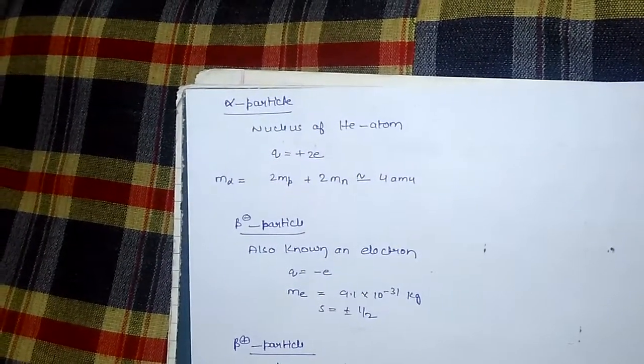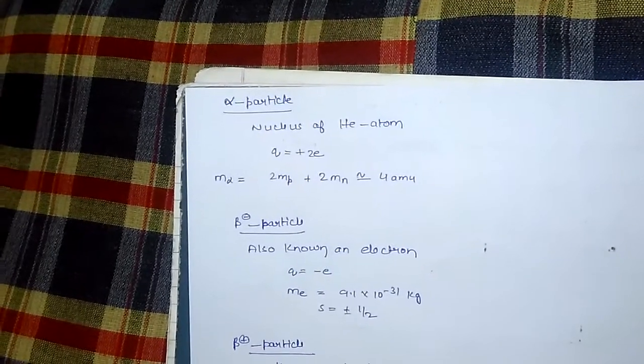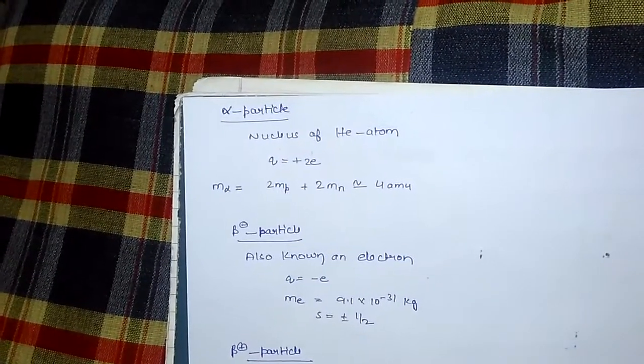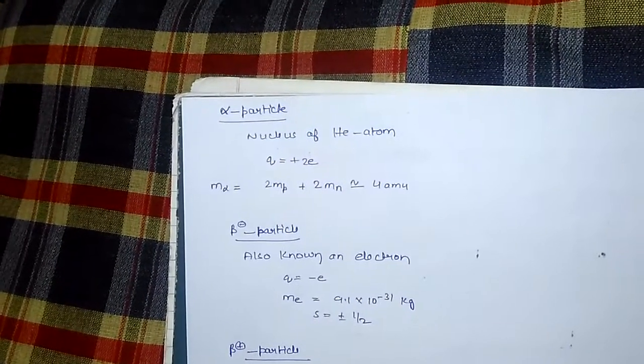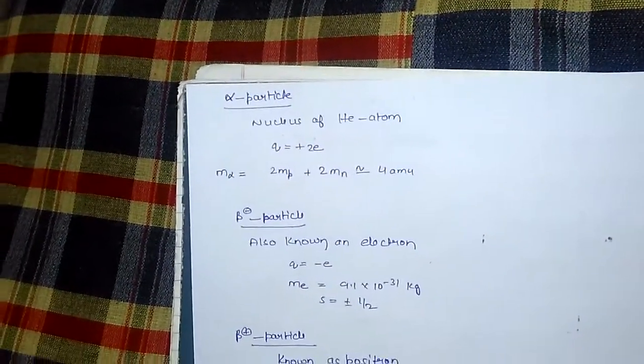Beta negative particle, also known as electron: Charge equal to minus e, and mass equal to 9.8 into 10 to the power minus 31 kg. Spin quantum number equal to plus minus half.